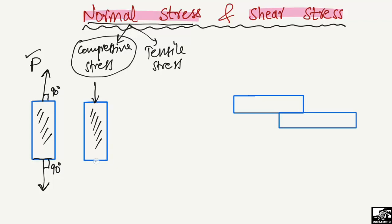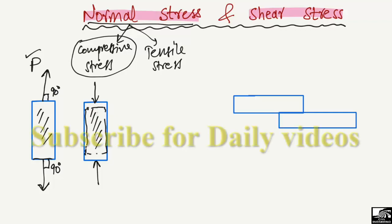When the load acts in a compressive way — for example, the load is applied perpendicular to this object but it is in the compression direction — it tries to compress and squeeze this material. We say that this load is known as a compressive load and the stresses created inside this object will be compressive stresses.